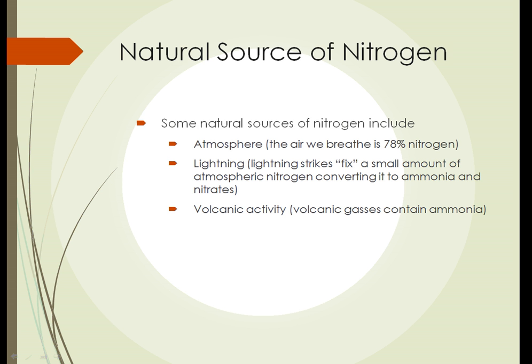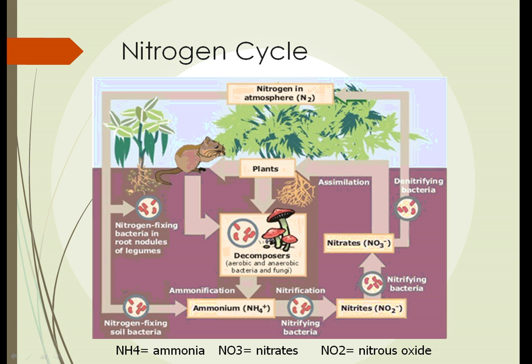The air we breathe is 78% nitrogen, but most of that nitrogen is not available for plants. However, when lightning strikes, the temperature and electrical conductivity of the lightning converts a small amount of nitrogen in the atmosphere to ammonia and to nitrates. That falls to the ground and is available for use by plants. Volcanic activity is another natural source because volcanic gases contain ammonia. In addition, nitrogen can be fixed in the soil by bacteria that don't necessarily live in legumes.